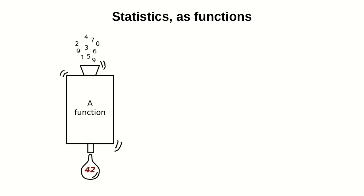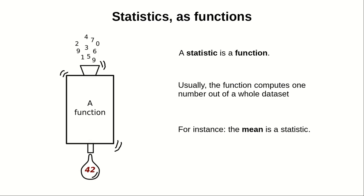A function is a mathematical object that takes an input and gives you an output. But in our contexts, in the context of the statistics of this course, a function usually computes one number out of the whole dataset. So a statistic is a function, some mathematical construct, some mathematical formula that gives you one number out of a bunch of numbers.